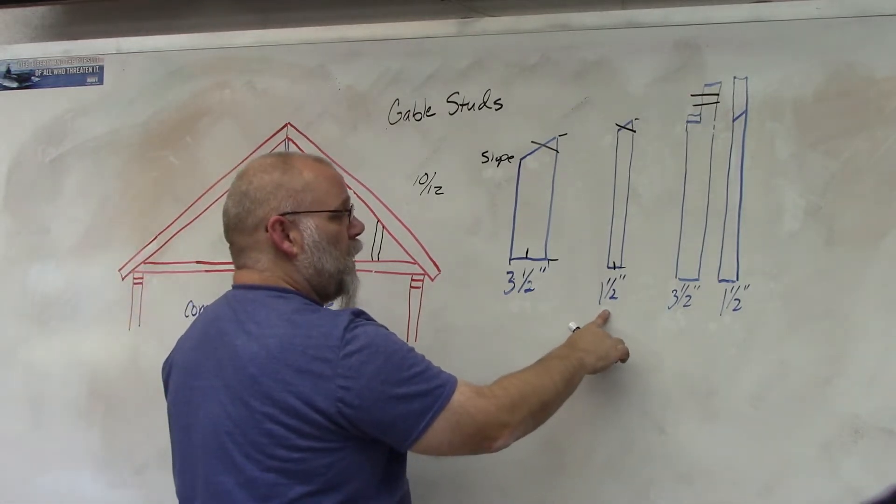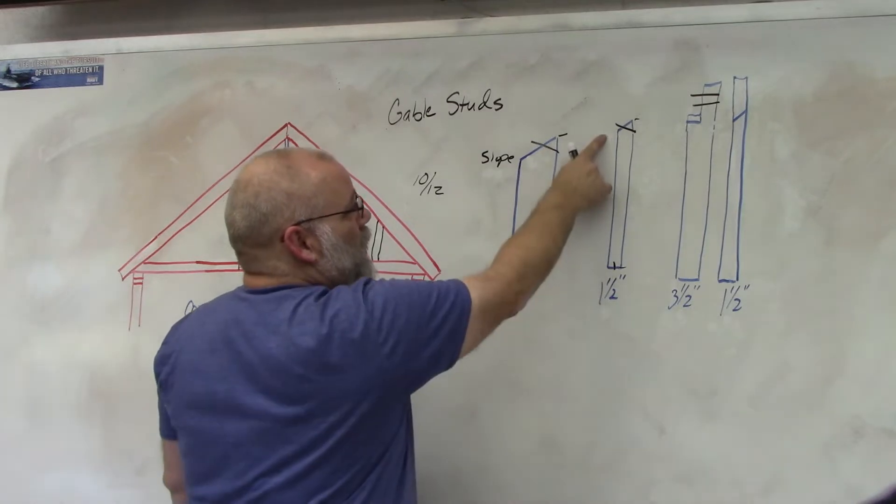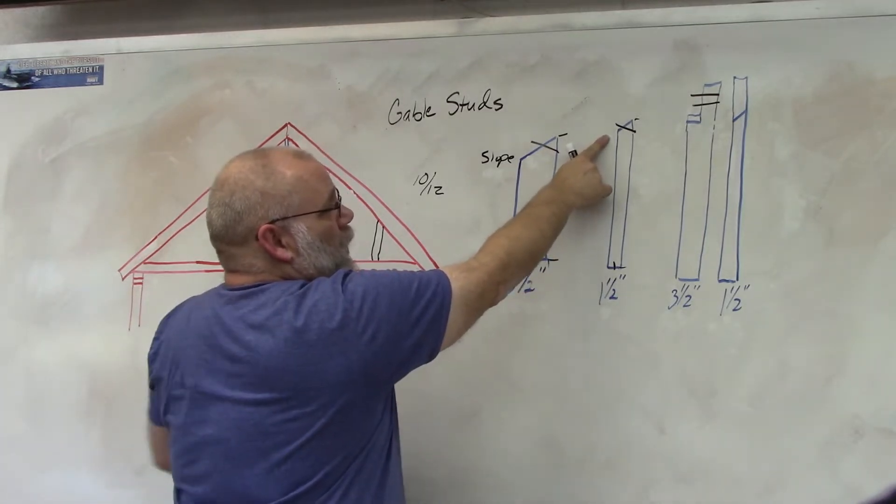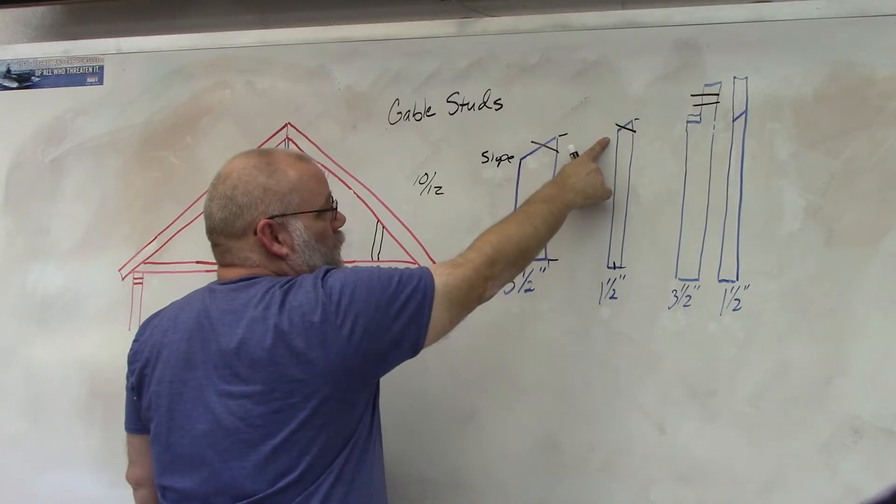Now you can do it on the one and a half inch side also. So it'll cut with a bevel on this end of the board.